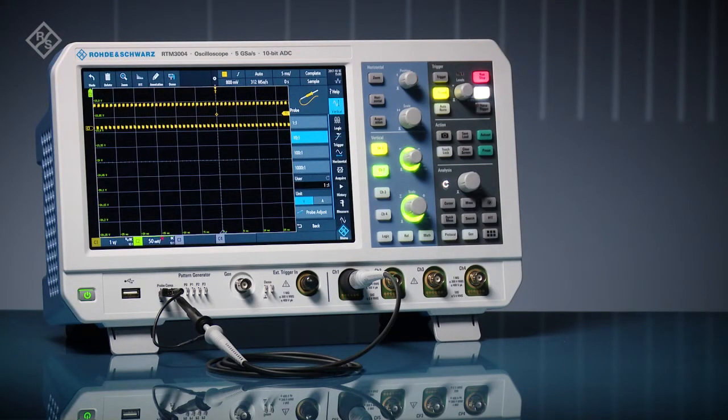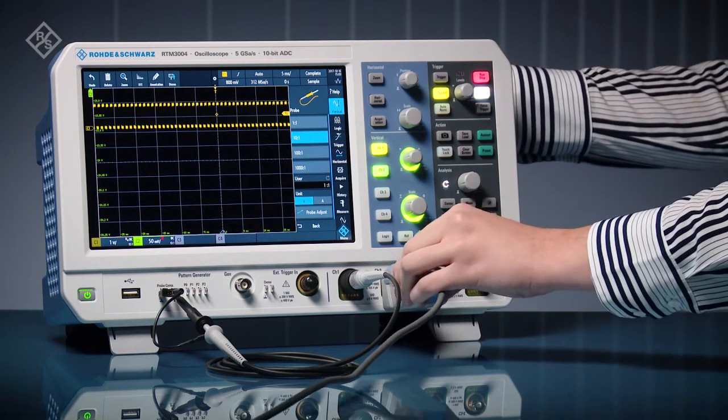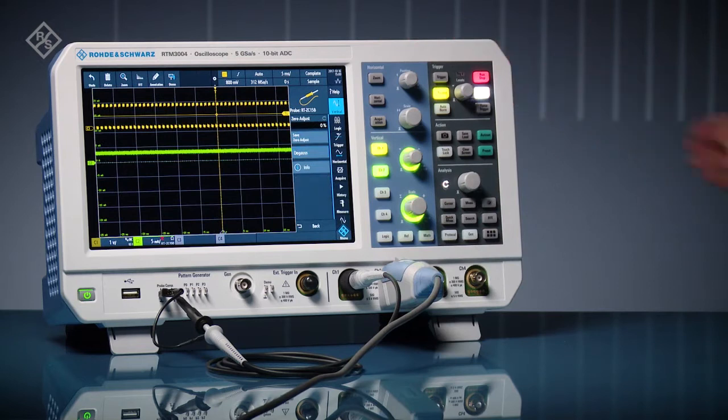Rohde & Schwarz RTM 3000 and RTA 4000 Series Oscilloscopes include the Rohde & Schwarz probe interface. The interface supports passive probes and auto-detects attenuation ratio. Choose from one of the many available current probes. The oscilloscope automatically detects the probe and sets up the scope, like showing vertical scaling in amps.